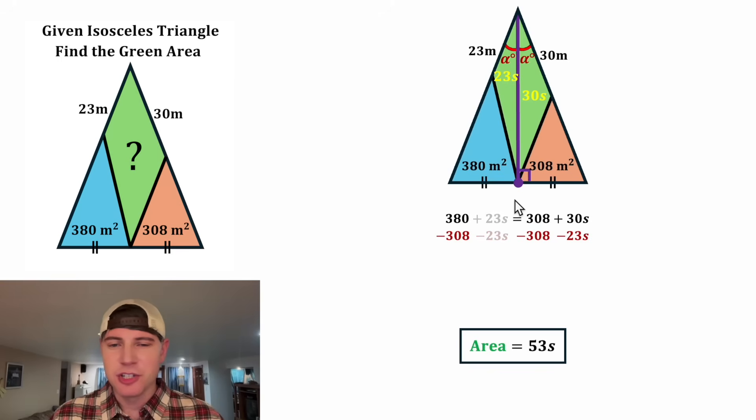On the left-hand side, these will cancel each other out. And on the right-hand side, these will cancel each other out. 380 minus 308 is equal to 72. And that'll be equal to 30s minus 23s, which is 7s. Let's smush everything together and divide both sides by 7. And now we have our value for s. It's equal to 72 over 7.